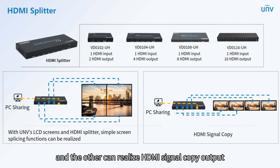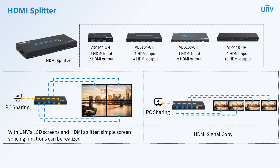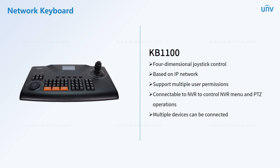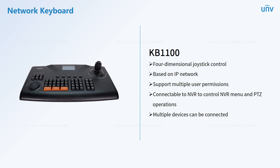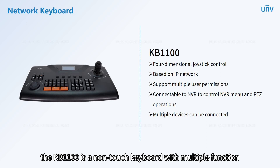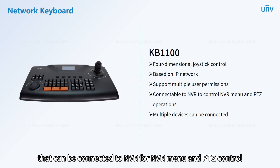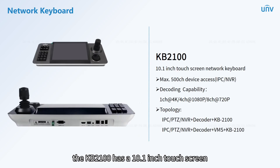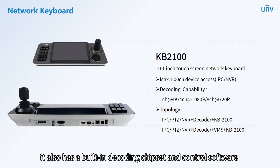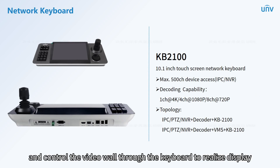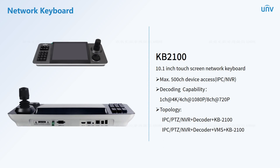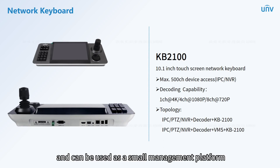The network keyboard is the fourth product series. Its main function is to replace the mouse and keyboard to control the IP camera. This series has the KB1100 and the touchable network keyboard KB2100. The KB1100 is a non-touch keyboard with multiple function keys and a 4D joystick that can be connected to NVR for menu and PTZ control. The KB2100 has a 10.1-inch touch screen, can realize touch control, and has a built-in decoding chipset and control software, enabling video decoding and uploading to the video wall, controlling display split operations, supporting access to 500 devices, and functioning as a small management platform.